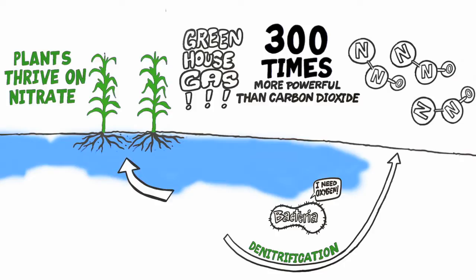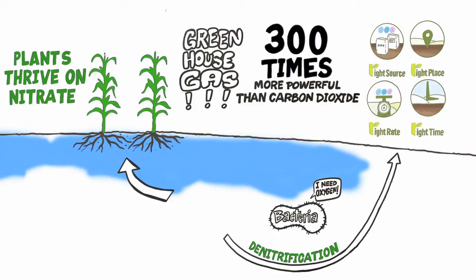Denitrification is a natural process that we can't completely prevent. However, by using 4R techniques, we can greatly reduce the amount of nitrous oxide produced, while still meeting sustainability goals.